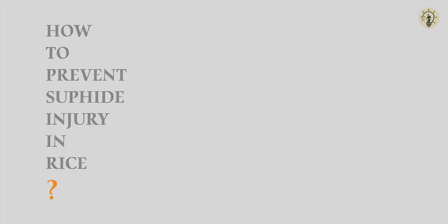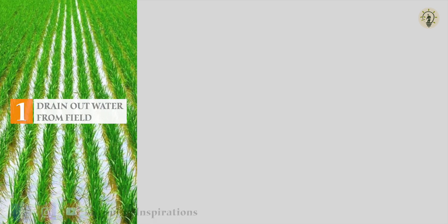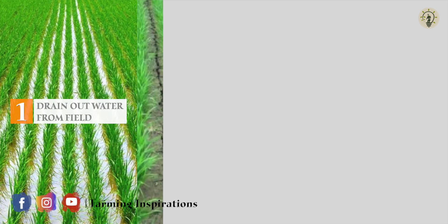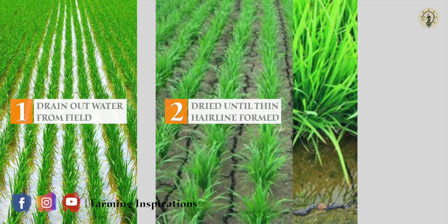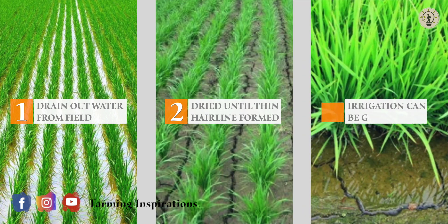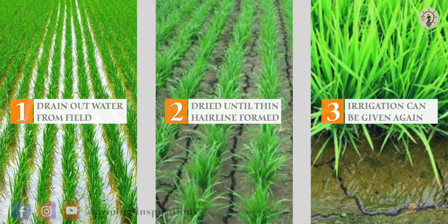To prevent sulfide injury in rice, water has to be drained out from the field completely. The field should be left to dry until it attains thin hairline cracks, after which irrigation can be done again.